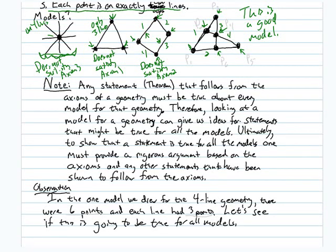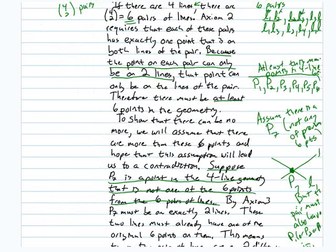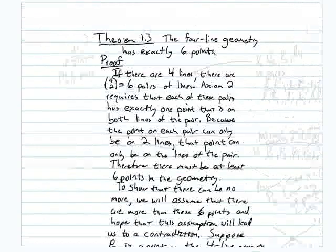In this model, we can observe that there are six points: P1, P2, P3, P4, P5, and P6. So maybe we could prove from these three axioms that there exist exactly six points in this geometry. Another observation is the number of points on each line — one of the uniformity properties of finite geometries is that each line has the same number of points. This model suggests that number is three. So let's see if we can prove that.